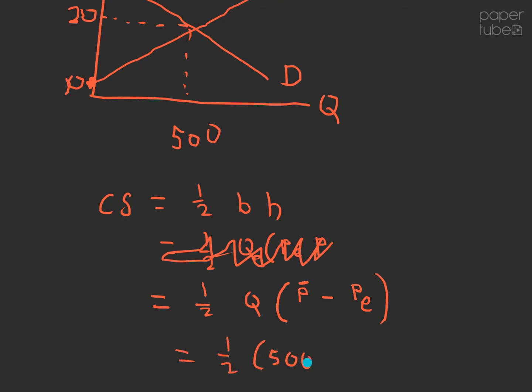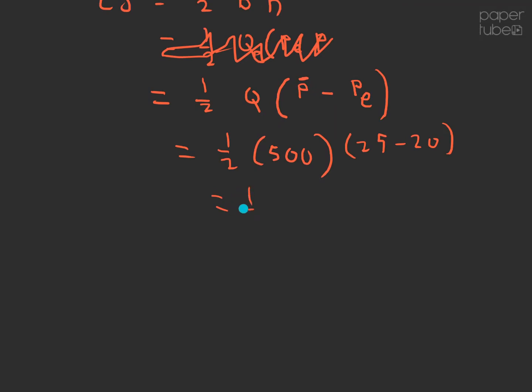So that's going to be one half times 500 multiplied by 25 minus 20. Close that parentheses. Start doing the math. So that's one half of 500 multiplied by 5. Let's take a calculator out and plug in some numbers here. Feel free to double check my math. That's one half of 2,500, which is 1,250. And that, of course, is in dollars. Consumer surplus is measured in dollars.